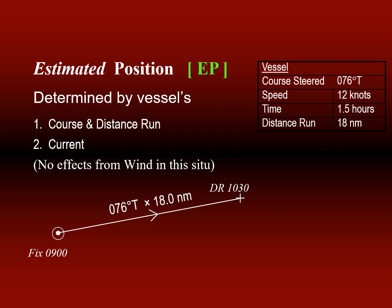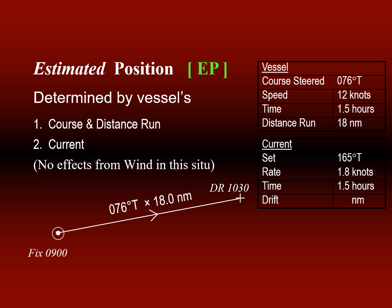The DR position is shown by the plus or cross sign at 10:30, but the estimated position also takes into account the effect of the current. In this case, the current is setting at about 165° true, rate is 1.8 knots, time is 1.5 hours, so the drift is 1.8 multiplied by 1.5, which equals 2.7 nautical miles. The set and drift of the current are applied at the DR position, with the three arrows drawn towards 165°. Your estimated position is therefore slightly different from the DR position.